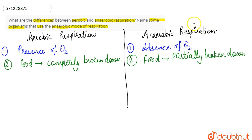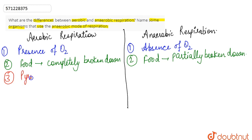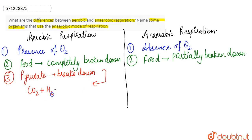The third point of difference is about end products. In aerobic respiration, when pyruvate breaks down, the end products produced are carbon dioxide, water, and 38 molecules of ATP — representing a large amount of energy.